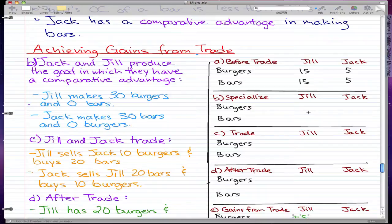So Jack and Joe produce the good in which they have a comparative advantage. For Jack, that would be bars. For Jill, that would be burgers. So Jill makes 30 burgers and zero bars, and Jack makes zero burgers and 30 bars.